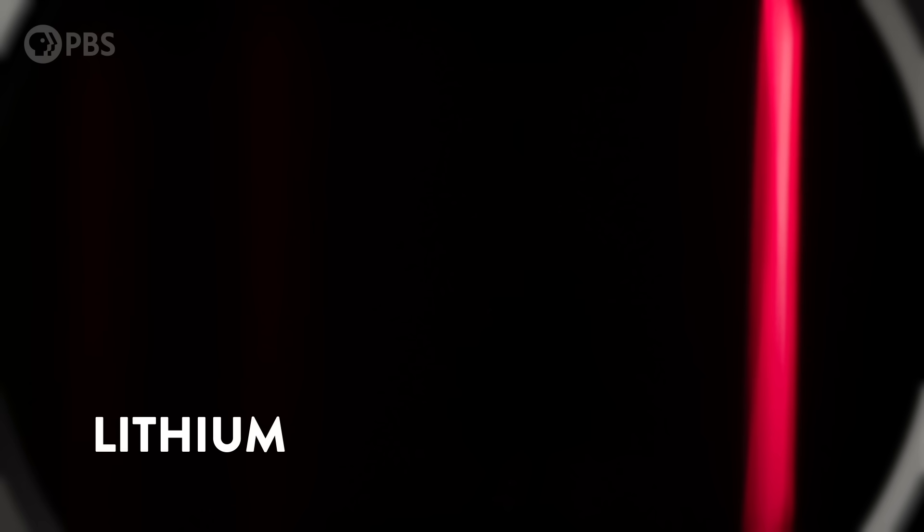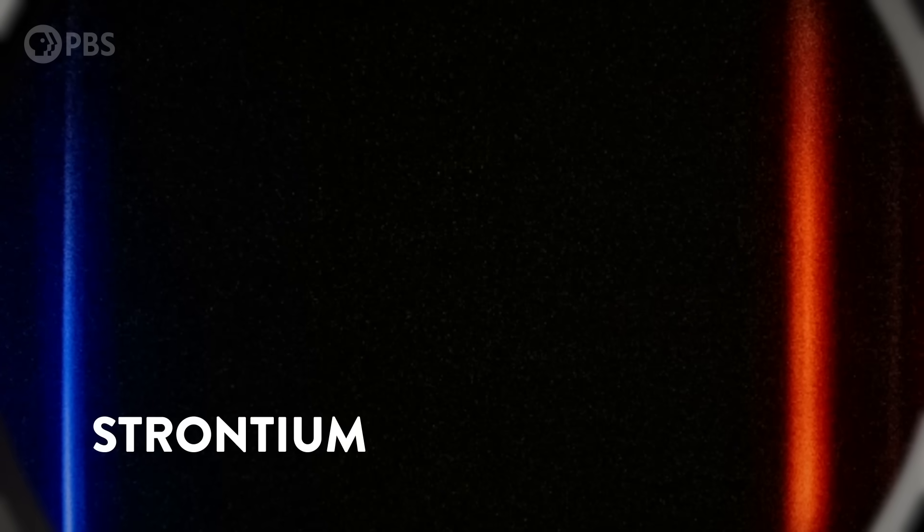For instance, sodium has a distinct yellow line. Lithium creates this bright red line, while strontium is red and more. And we're able to see calcium's strong lines in green and red, though it shines many other weaker ones that we can't see.